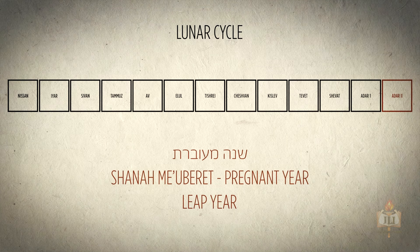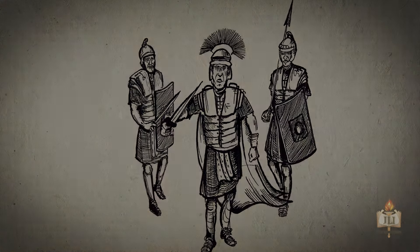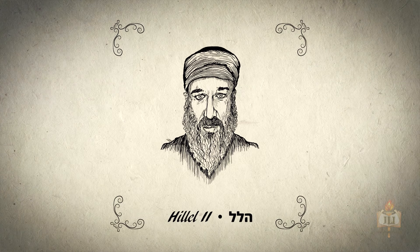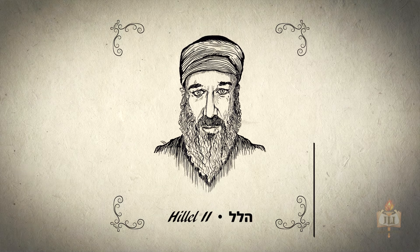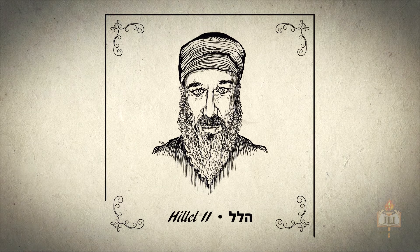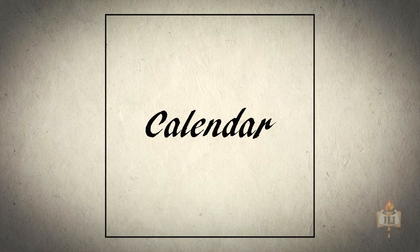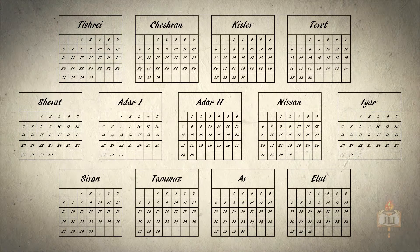This was the situation until the middle of the fourth century, at which time the Romans forcibly disbanded the Sanhedrin. Hillel the Second, the last leader of the Sanhedrin and a descendant of Rabbi Yehuda Hanasi, anticipated this. Therefore, before the Sanhedrin was disbanded, they established a fixed calendar for posterity. The Sanhedrin declared and established all future new months and leap years, granting the fixed calendar the same validity as the original system.